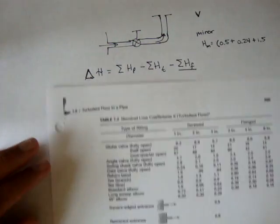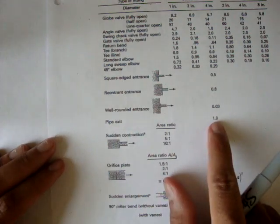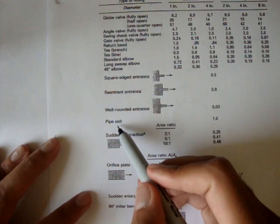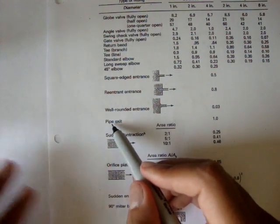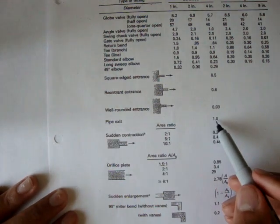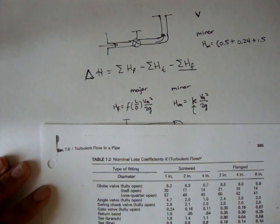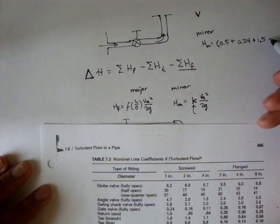And then the exit loss, here on my chart, the pipe exit is 1 for any type of pipe exit. So, it doesn't matter if the exit is rounded or it's squared. My chart is saying that the pipe exit loss coefficient K is going to be 1 for any case. And so, it would be just 1, plus 1, times the V squared over 2G.